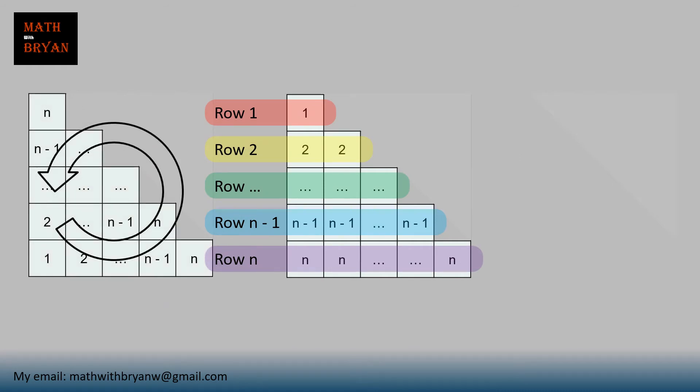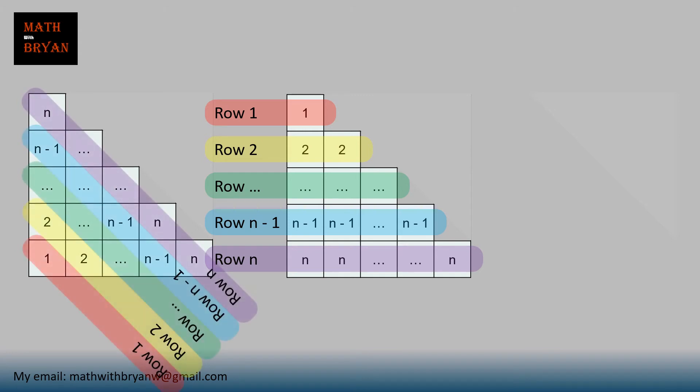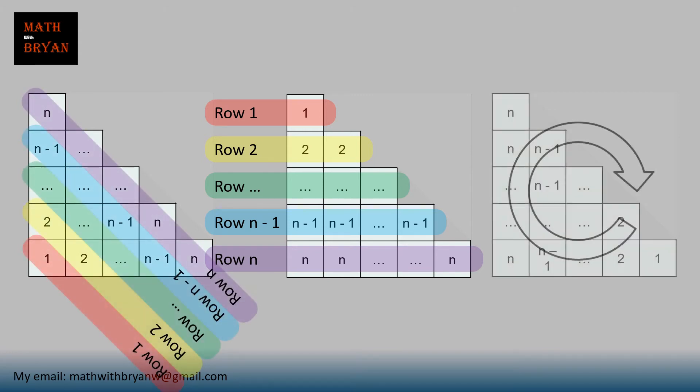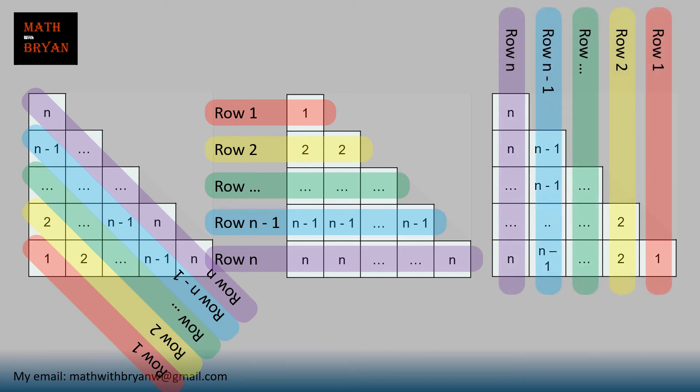We can make a copy, but rotate it counterclockwise. The rows are going to be diagonal. We can make another copy, but rotate it clockwise. The rows are all going to be vertical. Now, we add all of them together, but we have to remember to divide our final answer by 3.